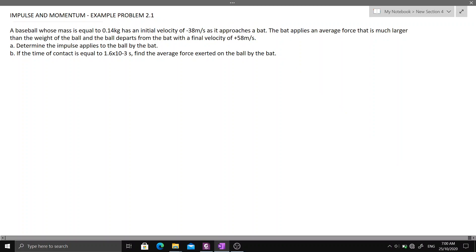Example problem 2.1: A baseball whose mass is equal to 0.14 kilograms has an initial velocity of negative 38 meters per second as it approaches a bat. The bat applies an average force that is much larger than the weight of the ball and the ball departs from the bat with a final velocity of positive 58 meters per second.